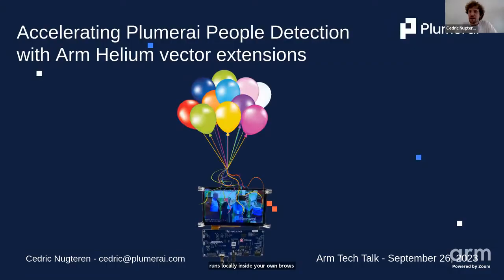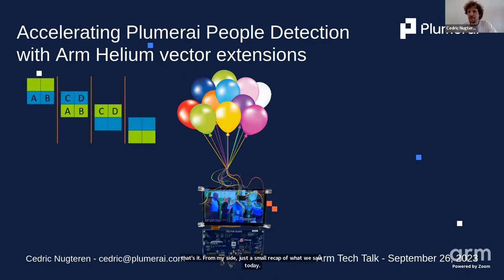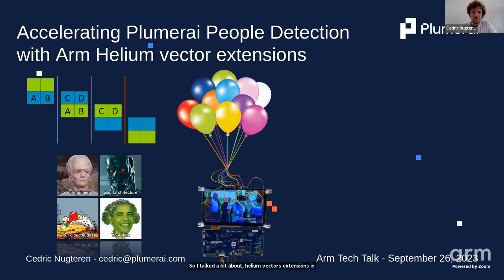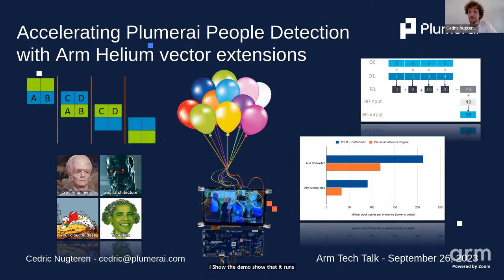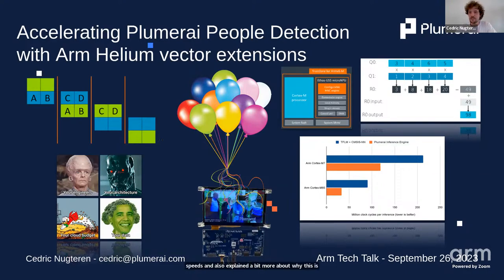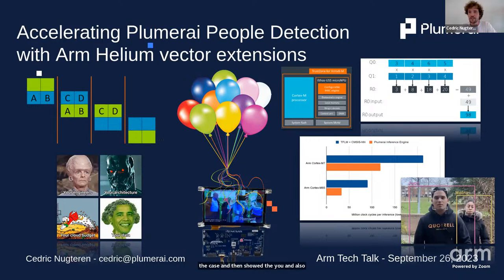That's a recap of what we saw today: Helium vector extensions and beat-wise execution, our tiny and efficient neural networks, the demo running at impressive speeds on the Renesas M85 board, why Helium provides such speedup, the Ethos-U NPU, and more applications from Plumeri. Thank you for your attention — I'll take any questions.